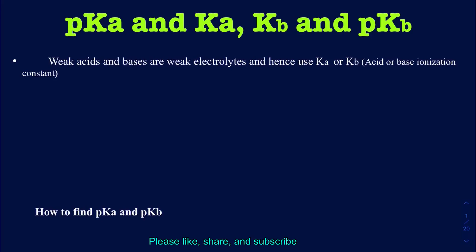In this lecture, we're going to be talking about the Ka, pKa, and the Kb and pKb. We have talked about strong acids and strong bases — they are strong electrolytes that ionize completely. But when we look at weak acids and weak bases, they are weak electrolytes and don't ionize completely. The extent to which they ionize is expressed as an equilibrium constant: Ka for acids and Kb for bases.